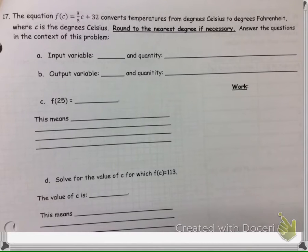This equation that we are given converts Celsius into Fahrenheit. It says to round to the nearest degree if necessary, so that just means if we have a decimal answer, round it so it's not a decimal anymore, to the whole number.